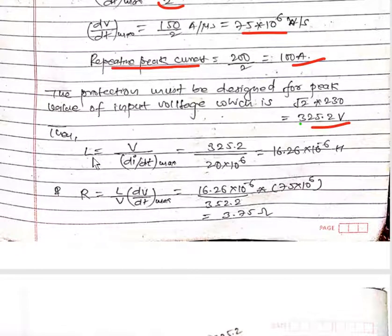To calculate the value of L, L equals V upon dI/dt max. We have calculated V as 325.2, so we use 325.2 upon dI/dt max. dI/dt max is 20 × 10^6, so on calculating we will get 16.26 × 10^-6 henry.